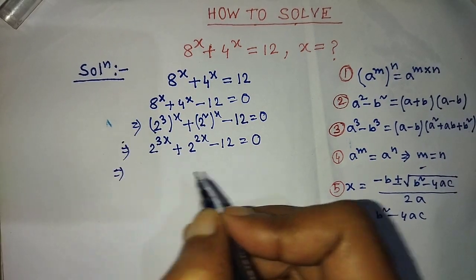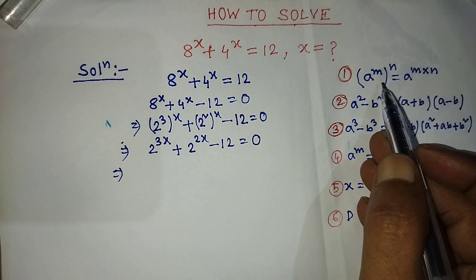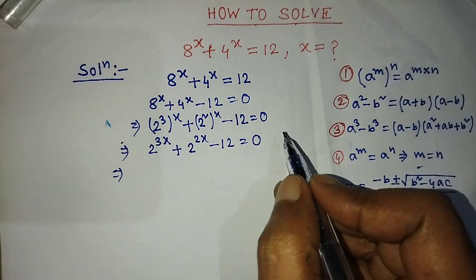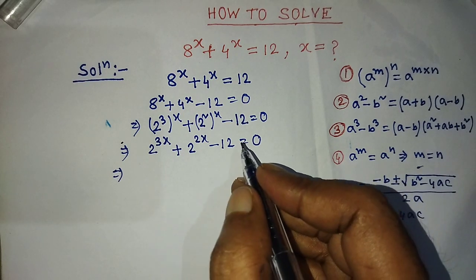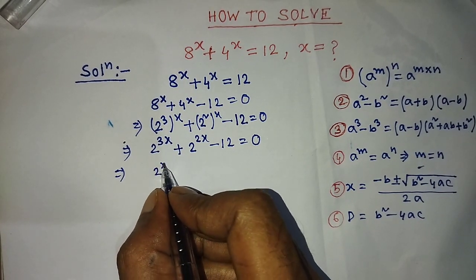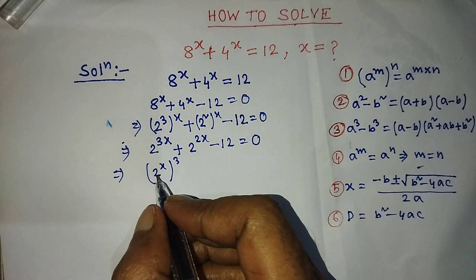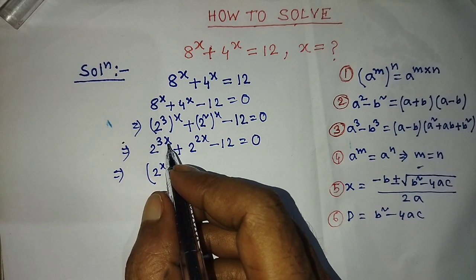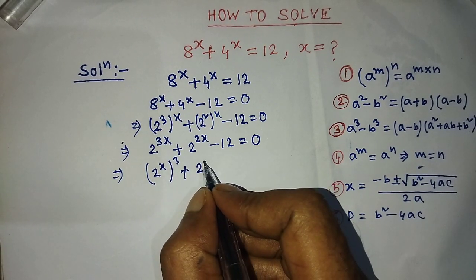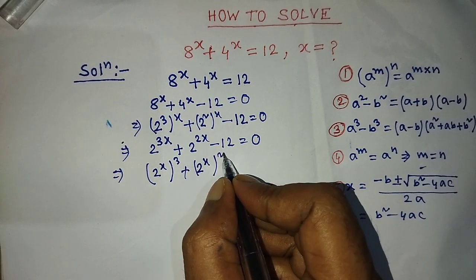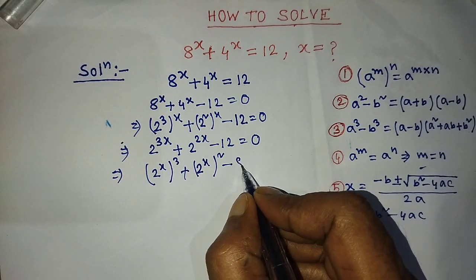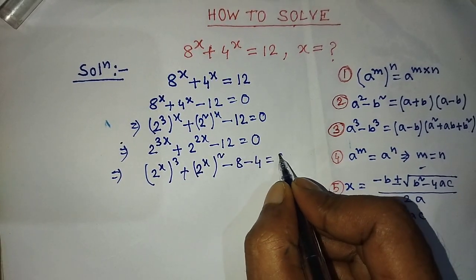After that, to find the value of x from this exponential equation, we have to convert this equation into cubic form. That is why we write 2 to the power x whole to the power 3 in place of 2 to the power 3x, and 2 to the power x whole to the power 2 in place of 2 to the power 2x. In the place of 12, we take minus 8 and minus 4, so the equation becomes equal to 0.